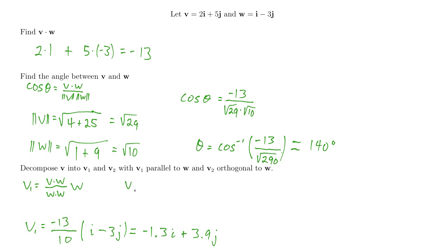To find v2, we remember that v2 is always v minus v1. So v2 equals v minus v1: for the i component, 2 minus negative 1.3 gives 3.3i. For the j component, 5 minus 3.9 gives 1.1j. So v2 equals 3.3i plus 1.1j. v1 is in the direction of w since it's a scalar multiple of w, and v2 should be orthogonal to w by the way we set this up.